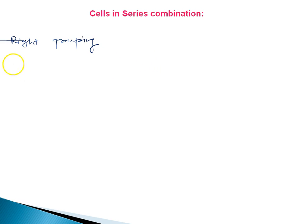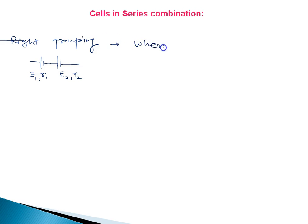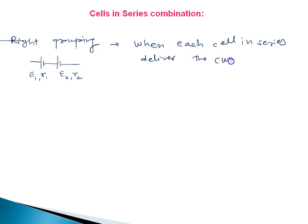We will say if the combination of the cell is like this — positive, negative, positive, negative — where this cell has EMF E1 and internal resistance R1, and this one has EMF E2 and internal resistance R2. When each cell in series delivers current in the same direction, then we say it is the right grouping of cells.